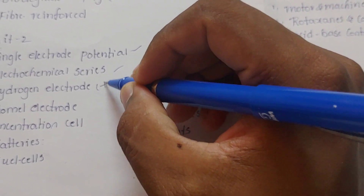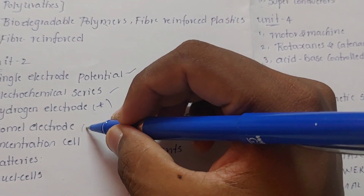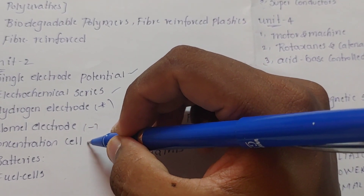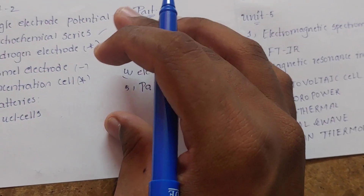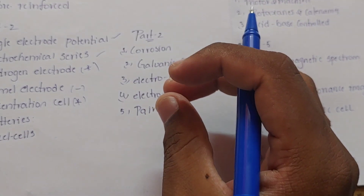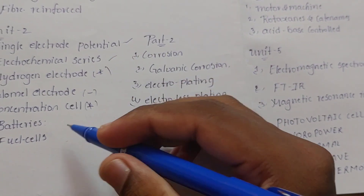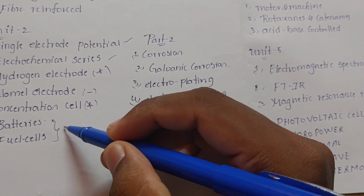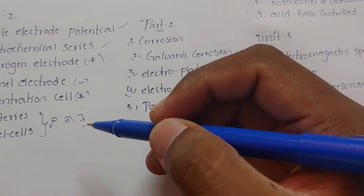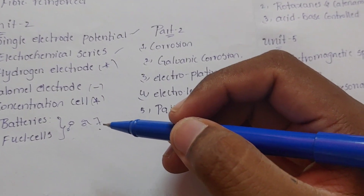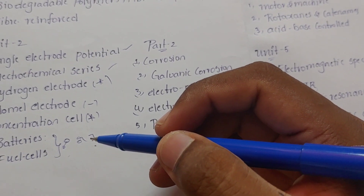Batteries and fuel cells will be the compulsory questions for 8 marks and 10 marks. If you are not sure, make a pencil diagram — you will get a good impression and good marks.